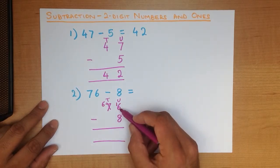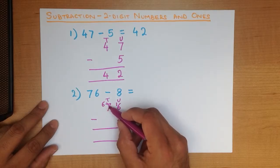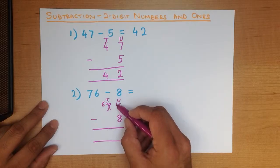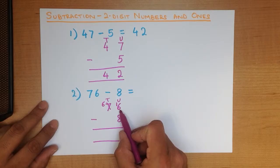Did you see how we did that? We took 1 from here. So 7 minus 1 is 6. And that 1 we put over here. The units column has now become 16 minus 8.